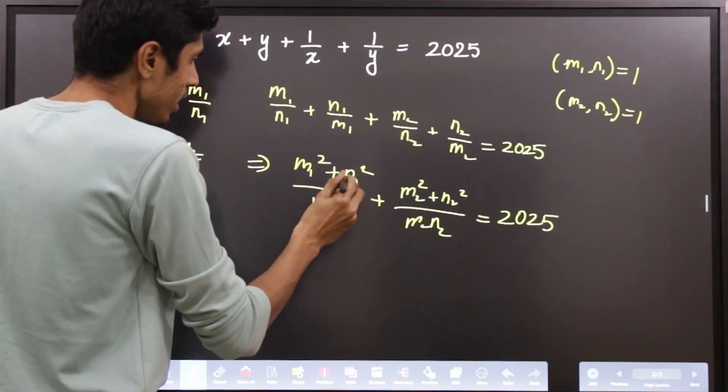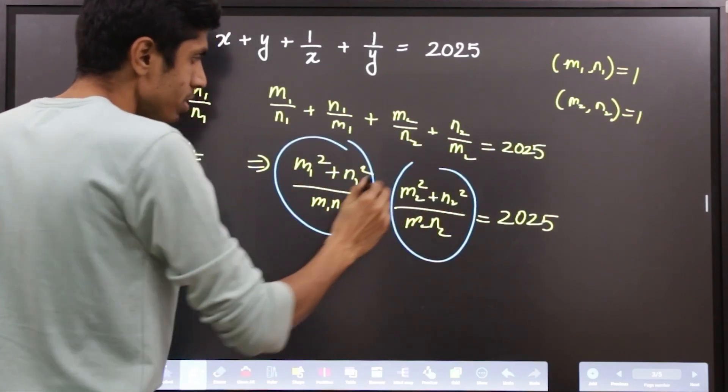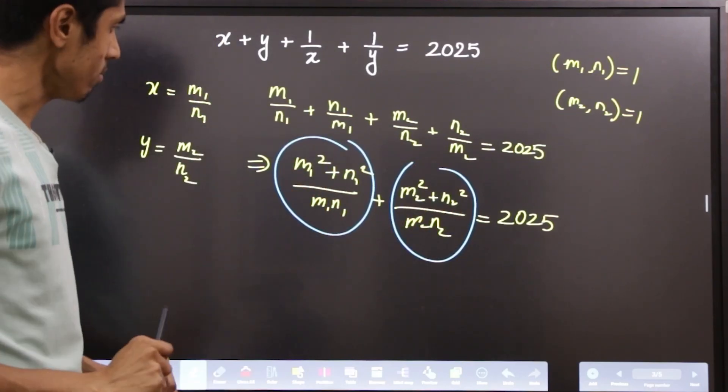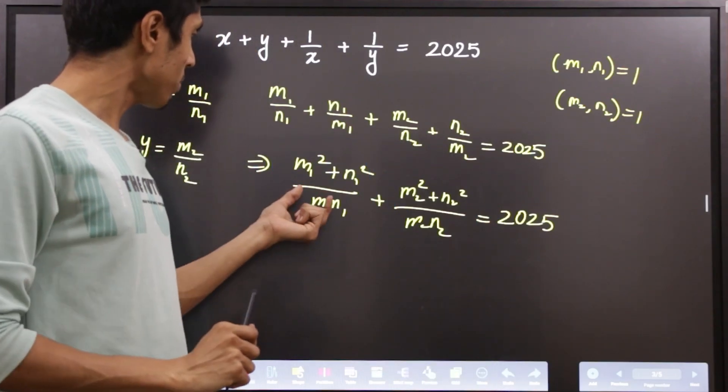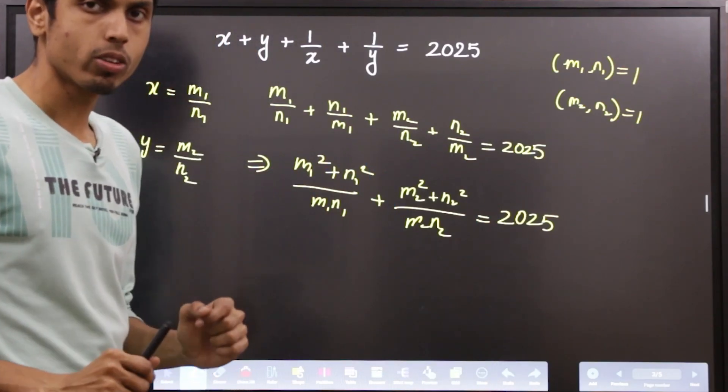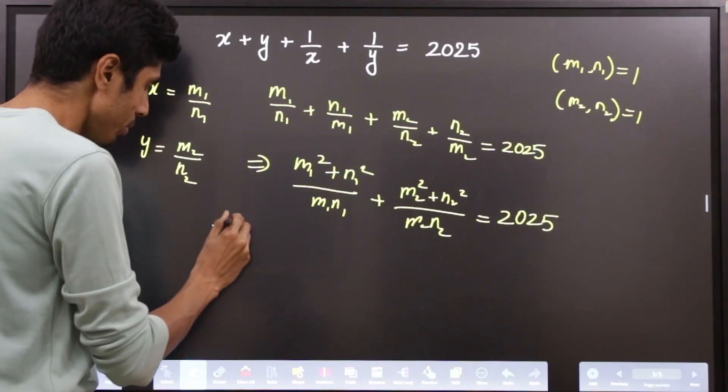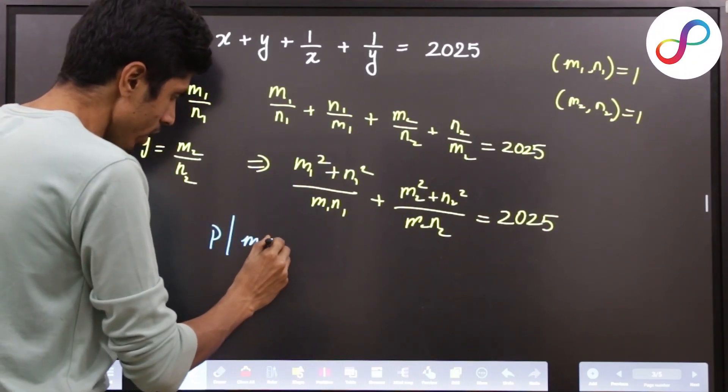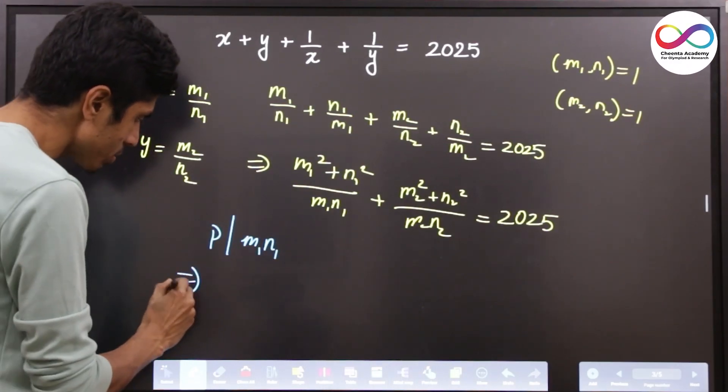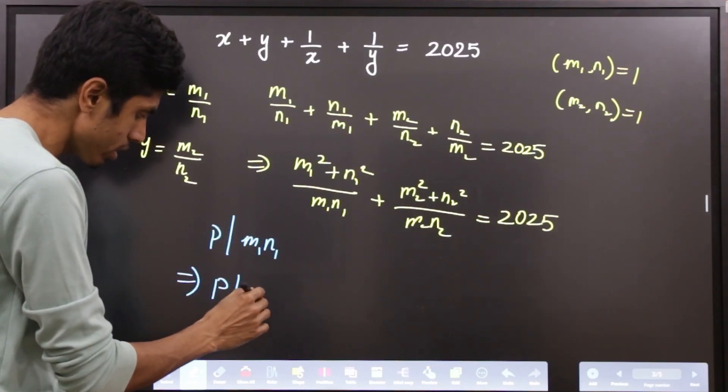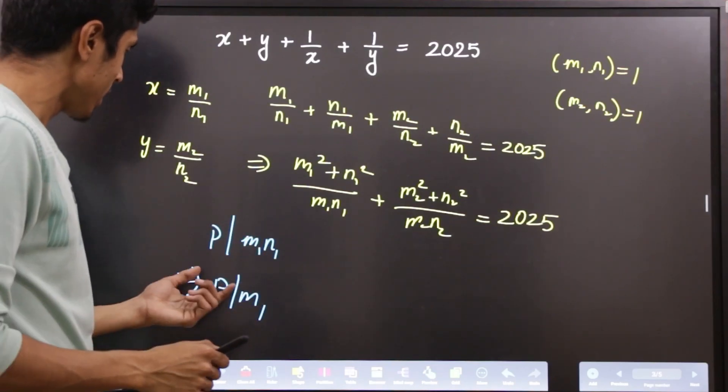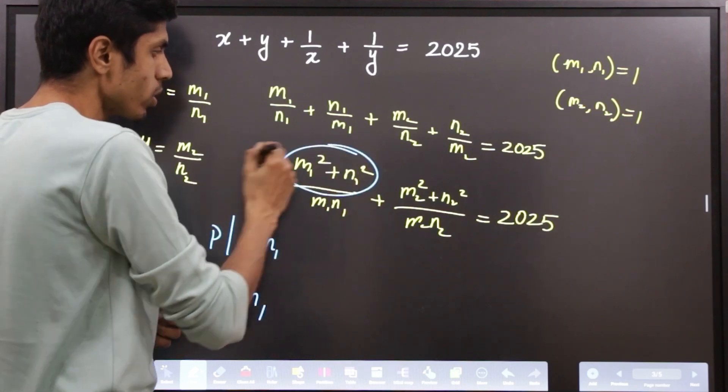Now notice, each of these are by themselves reduced fractions. For the sake of contradiction, let a prime p divide both numerator and denominator. Say a prime p divides m1·n1, which means it must be a prime factor of either m1 or n1. So let's say prime p divides m1 for example.